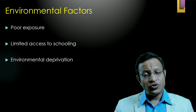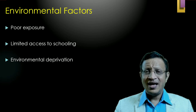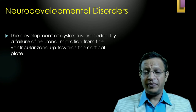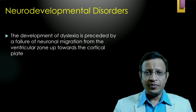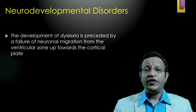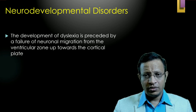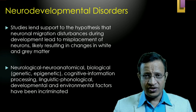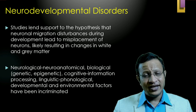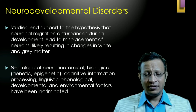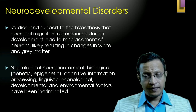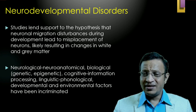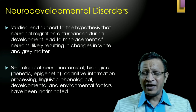Further factors include poor exposure to academics, limited access to schooling, and environmental deprivation. The most commonly accepted hypothesis is the neurodevelopmental disorder hypothesis. Dyslexia studies have implicated and hypothesized failure of neuronal migration from the ventricular zone towards the cortical plate. Studies have said that neuronal migration disturbances during development lead to misplacement of neurons, likely resulting in changes in white and gray matter. Overall, neurological, neuroanatomical, biological, genetics, epigenetics, cognitive information processing, linguistic and phonological developmental problems, and environmental factors have all been implicated in SLD.